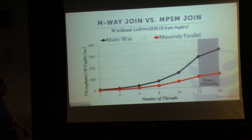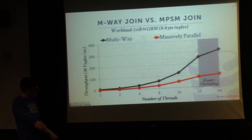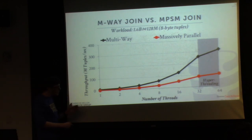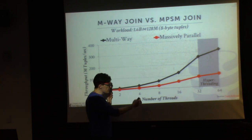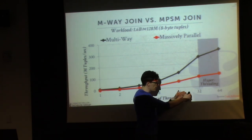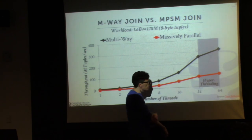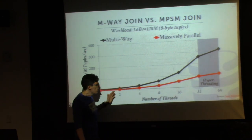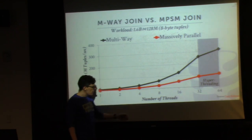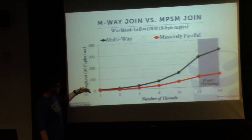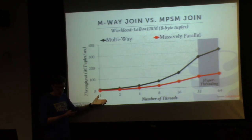Another measurement they did was to see how these algorithms are affected by hyper-threading. They have 64 logical threads — 32 hardware threads, 64 with hyper-threading. The x-axis is shown on a log scale, and what you want to see is that as you double the number of threads processing the join...